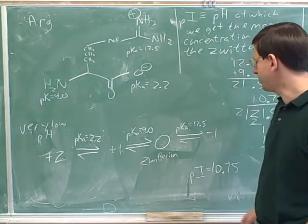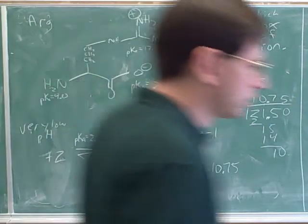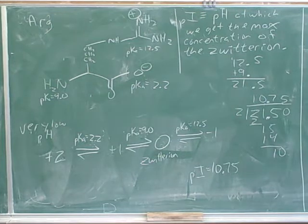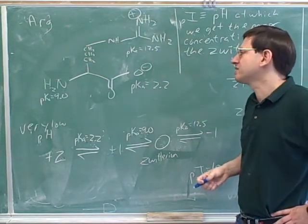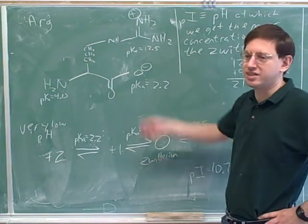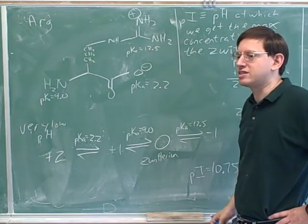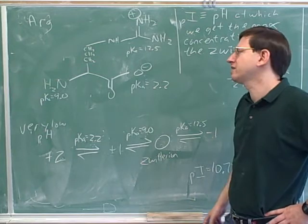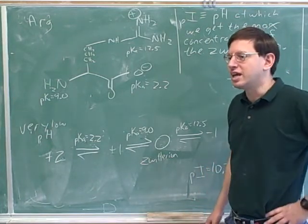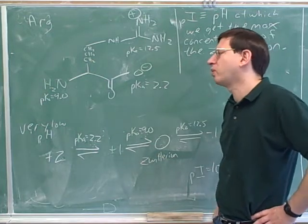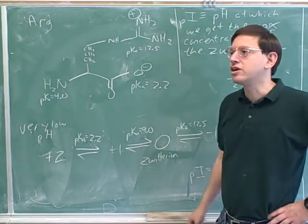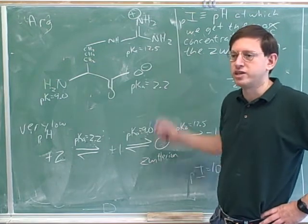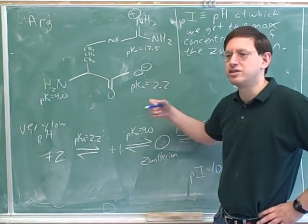Checking the table, the pI for arginine is listed as 10.8 — they just round it off, giving the same answer. However, your instructor can't simply ask for the pI of a standard amino acid since you can look it up. Instead, they might give you a structure whose pI isn't in the table — a made-up amino acid not found in biology — and ask you to calculate it. Your instructor could also ask you to find the pI for an entire peptide, a chain of amino acids, which won't be in the table. We'll use the same method for that.